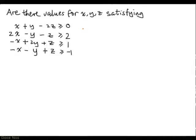Are there variables for x, y, and z satisfying the system of inequalities shown here? We have a system involving three variables, so it's going to be quite difficult to try to solve this graphically.